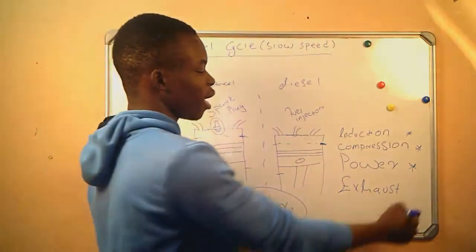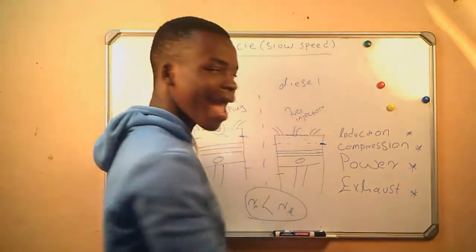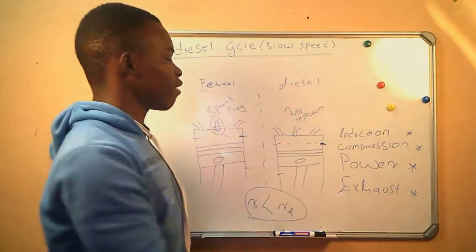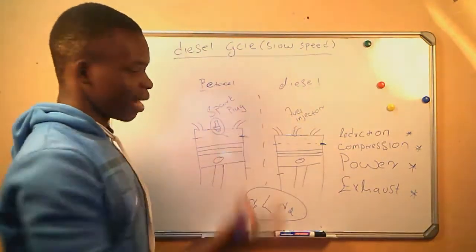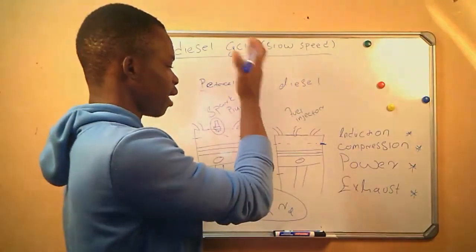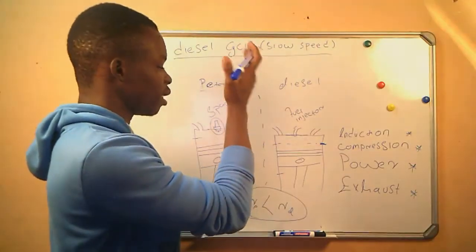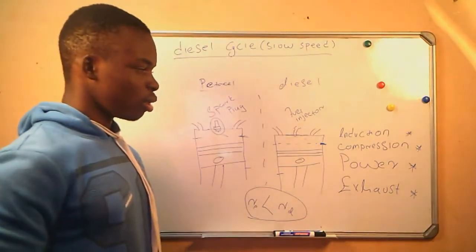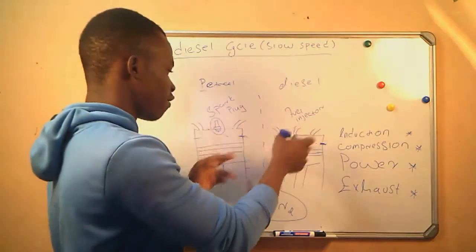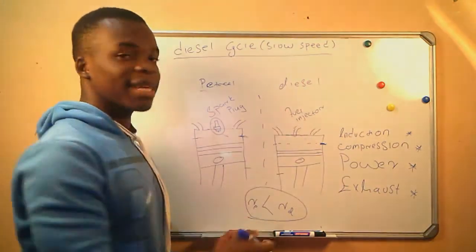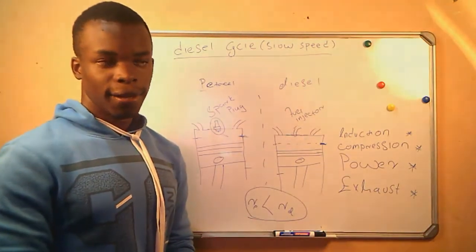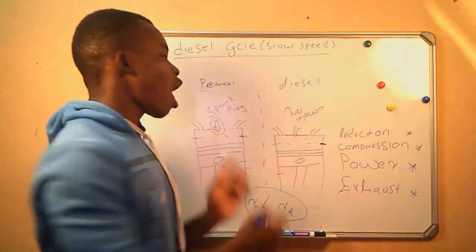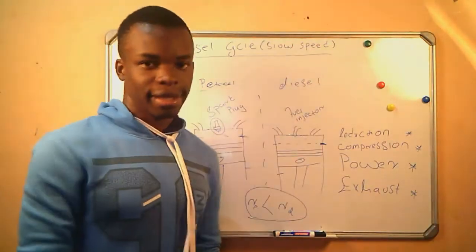And then from here, we will have our exhaust stroke, where now our outlet valve will open. The piston is moving from the bottom dead center to the top dead center, which will drive the burnt gases that are in the combustion chamber out of the cylinder.